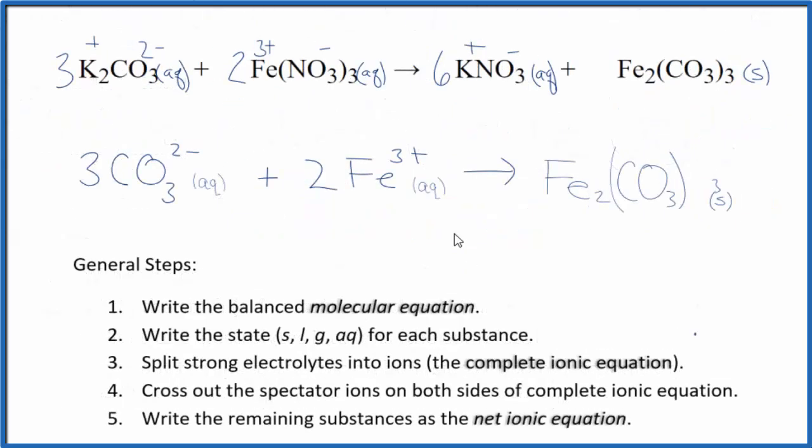And this is the balanced net ionic equation for potassium carbonate plus iron 3 nitrate. You'll notice charge is conserved. I have three times two minus, that's a minus six, and then I got a plus six. They cancel out. If you count the atoms up, each type will be the same on both sides as well. So mass is conserved.